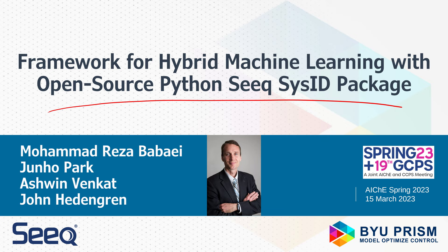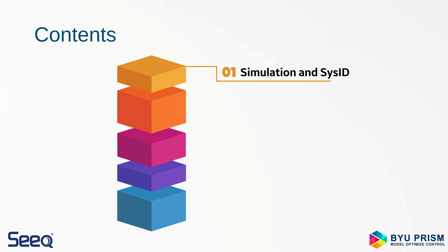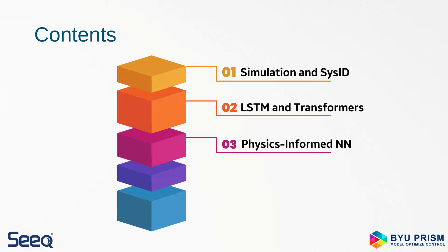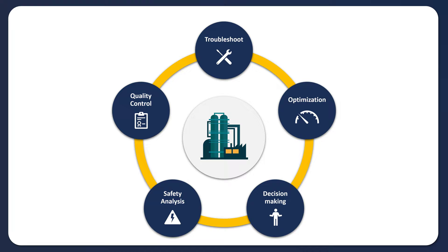I'll also share additional methods we're developing with hybrid machine learning. The outline for this presentation: first, we'll cover simulation and system identification with background on industrial practice and the latest developments, including long short-term memory and transformers for time series regression. We'll also cover physics-informed neural networks and how physics-based information improves extrapolation. Then I'll give a demonstration of the SEEK system identification add-on, followed by conclusions.